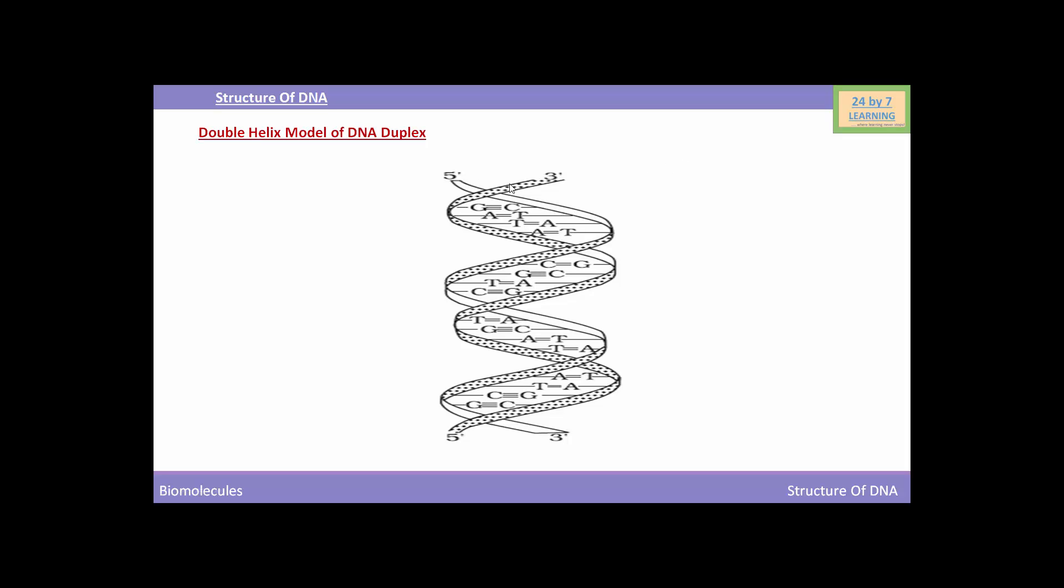Base pairing forms steps while the backbone of two polynucleotide strands forms railings. This is the backbone of polynucleotide strand. It forms the railing of the staircase and this is the base pairing which forms the steps of the staircase. Backbone is formed by sugar and phosphate.